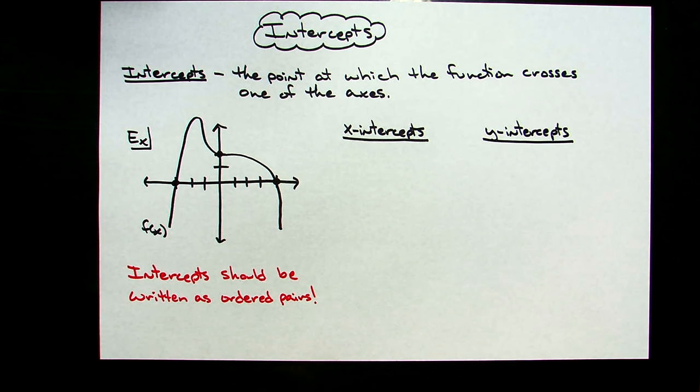Okay, today I'm going to take a quick look at intercepts, and this would be finding the intercepts from a graph. An intercept is the point at which the function crosses one of the axes, so you're either going to have x-intercepts or you're going to have y-intercepts.